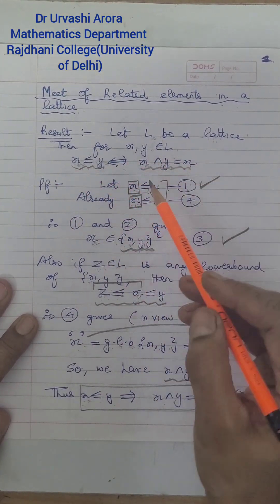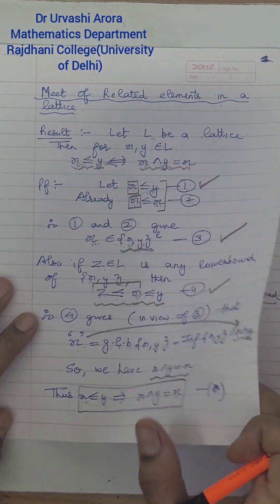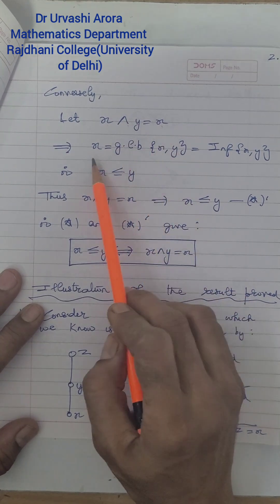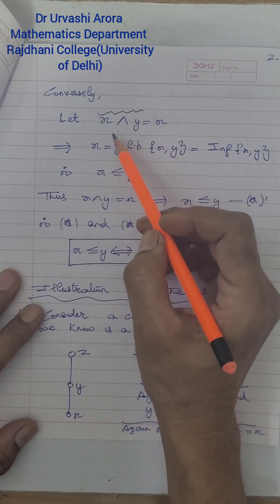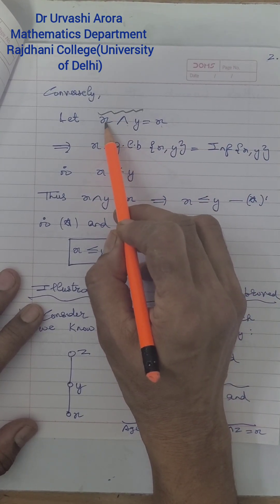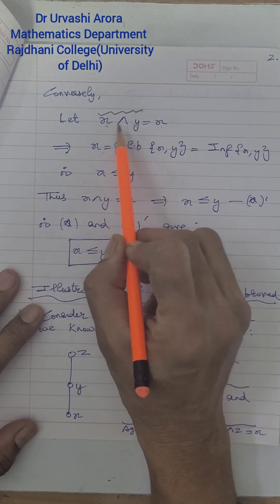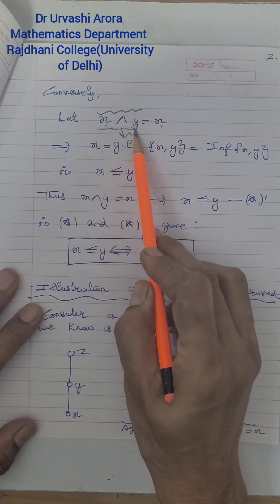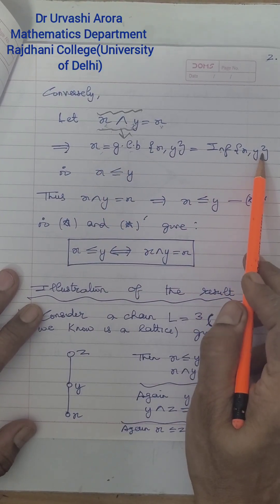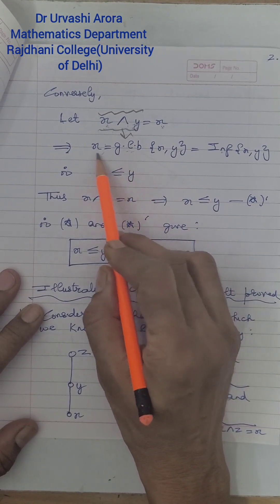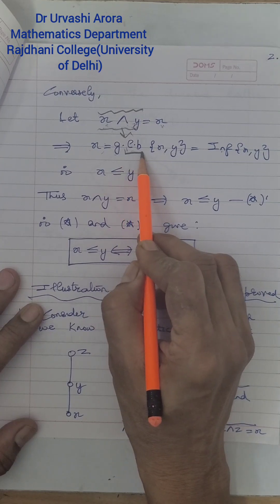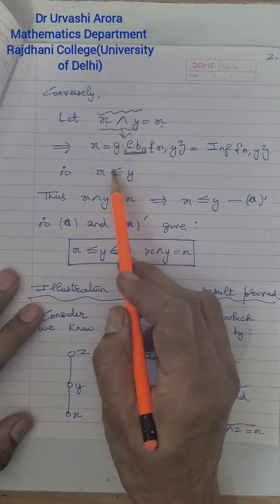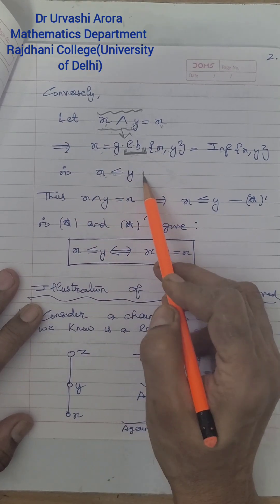Now for the other direction: if X meet Y equals X, I have to show that X ≤ Y. This is the converse, the second part of the result. Suppose X meet Y = X. This means X is the greatest lower bound of X and Y, since meet represents the greatest lower bound. Because X is the greatest lower bound, it is certainly a lower bound of X and Y, meaning X is smaller than both X and Y. In particular, X ≤ Y, which is what we wanted to show.